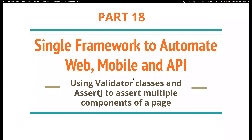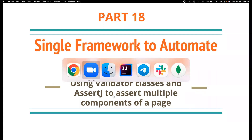In this particular class we are going to focus on a very simple use case where there is a page and you want to validate multiple components in the page. It looks like a simple thing — write a few lines of code and get it done. But if there are 10 or 15 fields or components to validate, the implementation will have a lot of boilerplate and code readability will suffer. So how can we provide a much cleaner, scalable, readable, and maintainable implementation using validator classes and AssertJ?